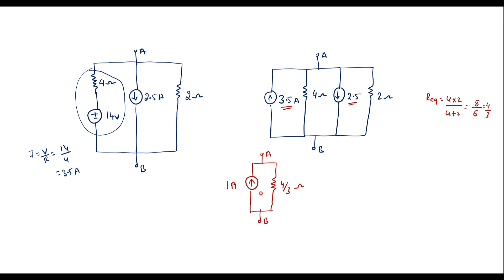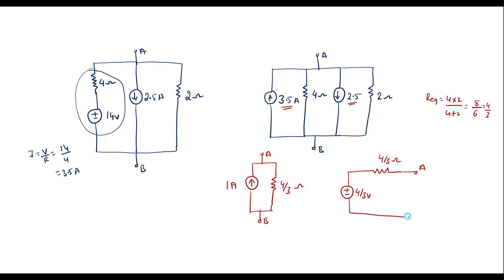Now let me convert this into a voltage source. V equal to IR, that is 1 into 4 by 3, which is 4 by 3 volts. This 4 by 3 ohm is connected in series with this. So the final reduced circuit is a voltage source of 4 by 3 volts in series with a resistance of 4 by 3 ohm between terminals A and B.